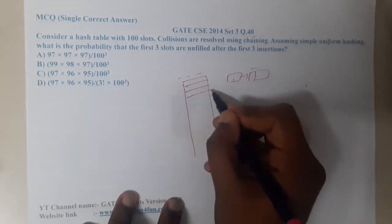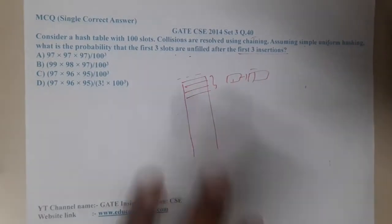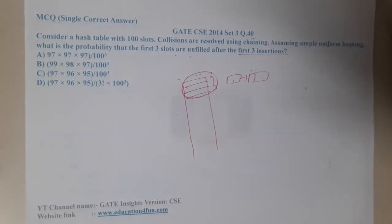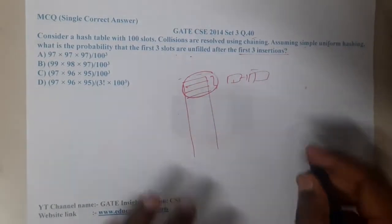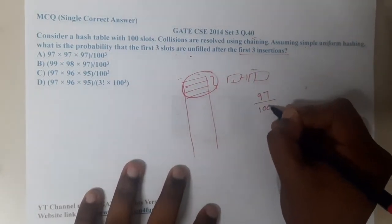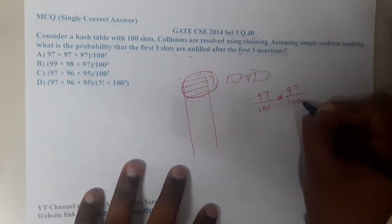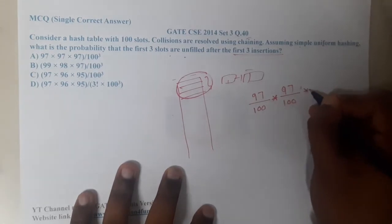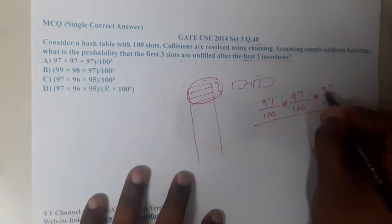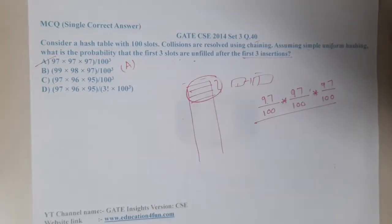So in three insertions we are trying to avoid these three spaces. In the first insertion you are having 97 choices out of 100. Since we are using chaining, in the second step you can also have 97 choices, and similarly in the third stage you will also have 97 choices. Hence the answer is 97 cubed by 100 cubed, so option A is the correct answer.